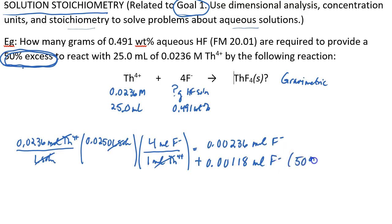Again, that's for this 50% excess they're wanting us to use. Let me add these two together, and that gives 0.00354 moles of fluoride needed to react with all of this thorium plus 50% extra. This also equals the moles of HF needed.